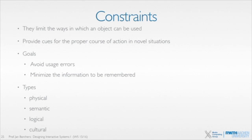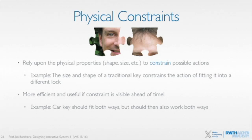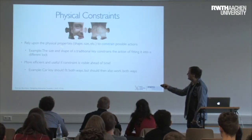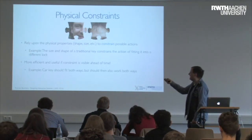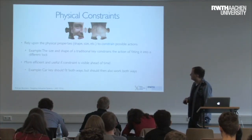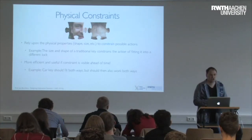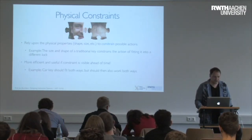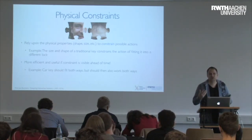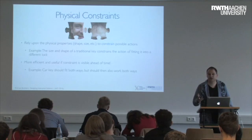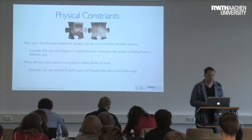I'll go through some examples — that's the easiest way to understand those. The first one, physical, basically means we rely upon the physical properties to constrain the actions that are possible. For example, if you take two puzzle pieces that don't match, you can't put them together. Another example: you take a traditional key and try to put it into a modern security lock — that will never work. So if you've got 10 keys, you're never going to try that key in the lock because, obviously, it won't fit.